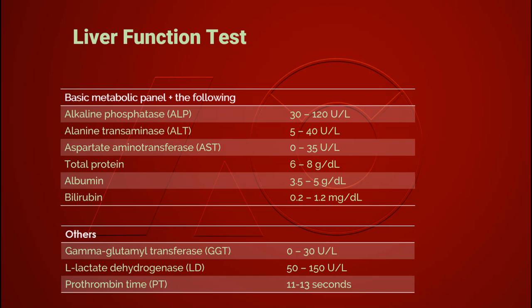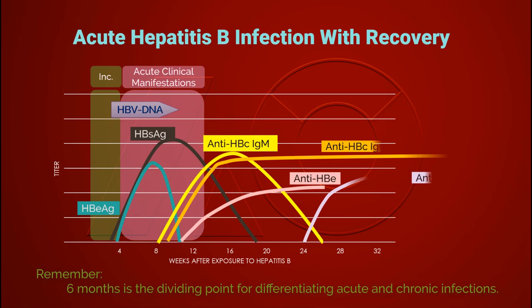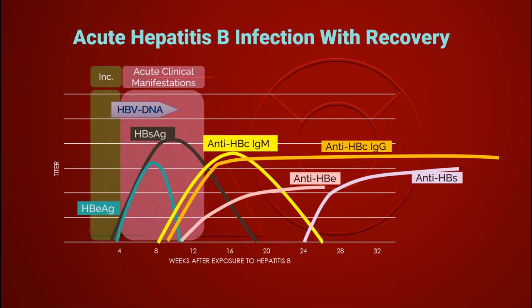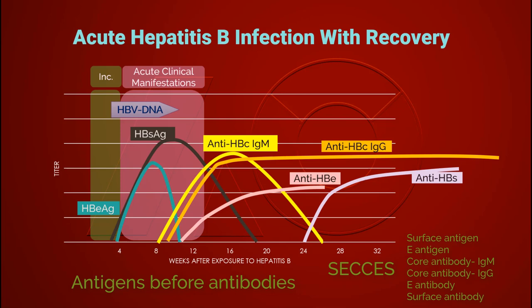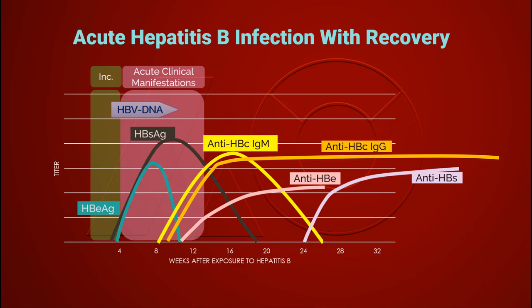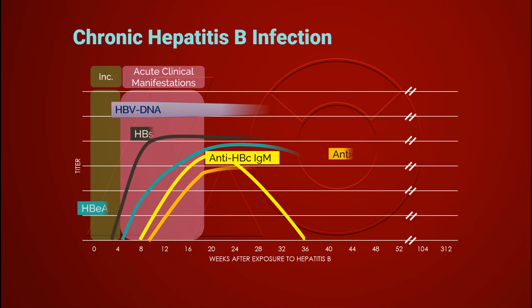However, as a nurse, we should know that these testing results might be abnormal should liver function be affected by hepatitis infection, and we should plan patient care accordingly. In acute hepatitis B infection, the serologic antigens and antibodies most likely would be presented as indicated in this graph. A helpful mnemonic is antigen before antibodies in the order of S-E-C-C-E-S — 'success.'